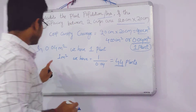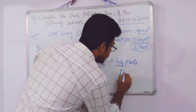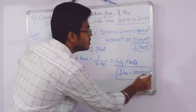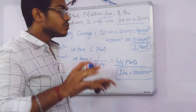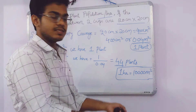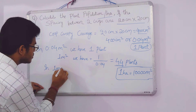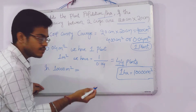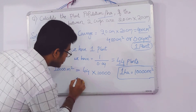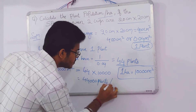In one meter square we have 44 plants, but we need to calculate it for one hectare. We need to remember that one hectare equals 10,000 meters square. Since in one meter square we have 44 plants, in 10,000 meters square we have 44 multiplied by 10,000, which gives us 44,000 plants per hectare.